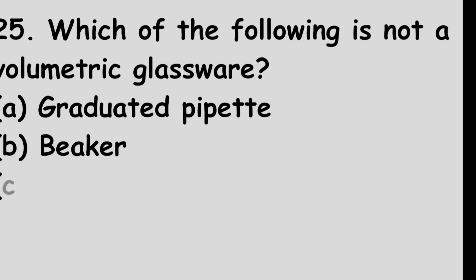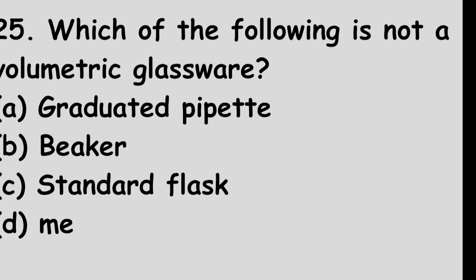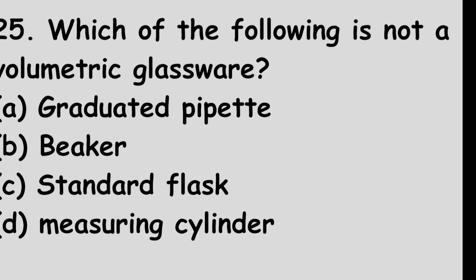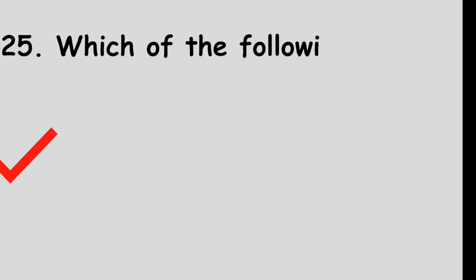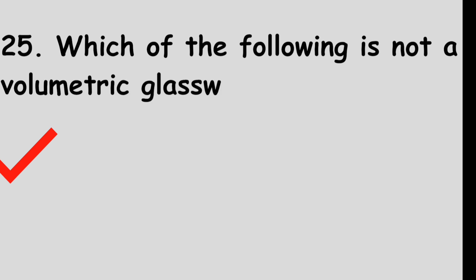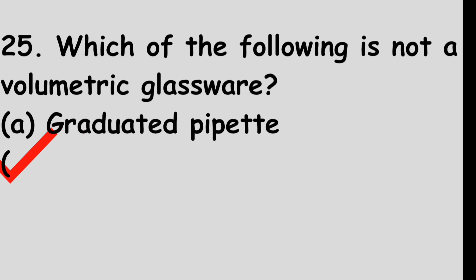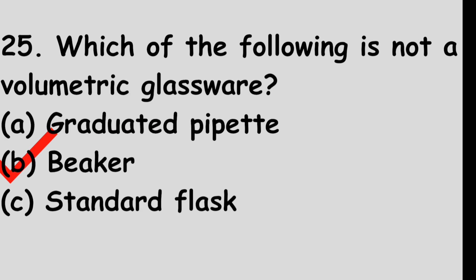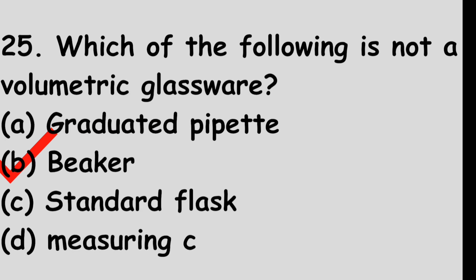Question number 25: Which of the following is not a volumetric glassware? Option A: Graduated pipette. Option B: Beaker. Option C: Standard flask. Option D: Measuring cylinder. The right answer is option B, beaker. A beaker is not a volumetric glassware.